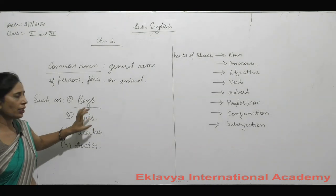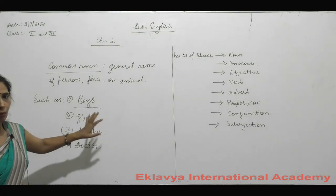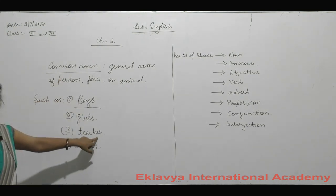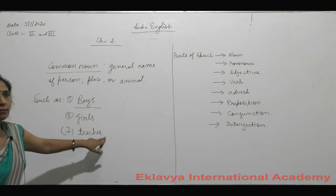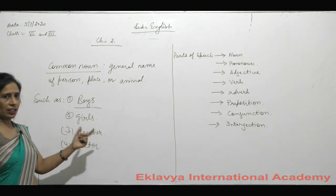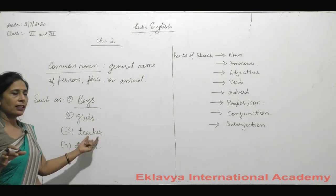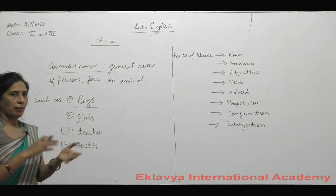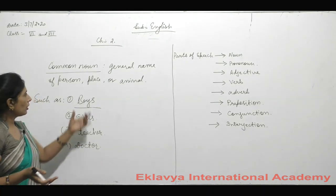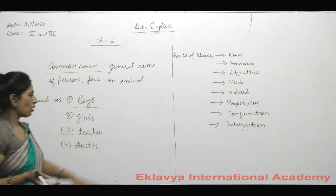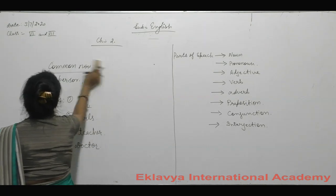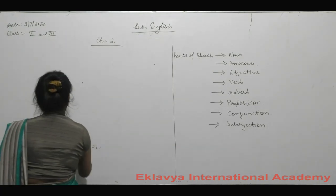Girls is also a category without a particular name — so girls is a common noun. Teacher may be anyone: English teacher, Hindi teacher, math teacher — all are teacher. It is a category. Doctor may be female or male — any doctor. So we give the name 'doctor', which is a common noun. The general name of any person, place or thing categorized into common noun.